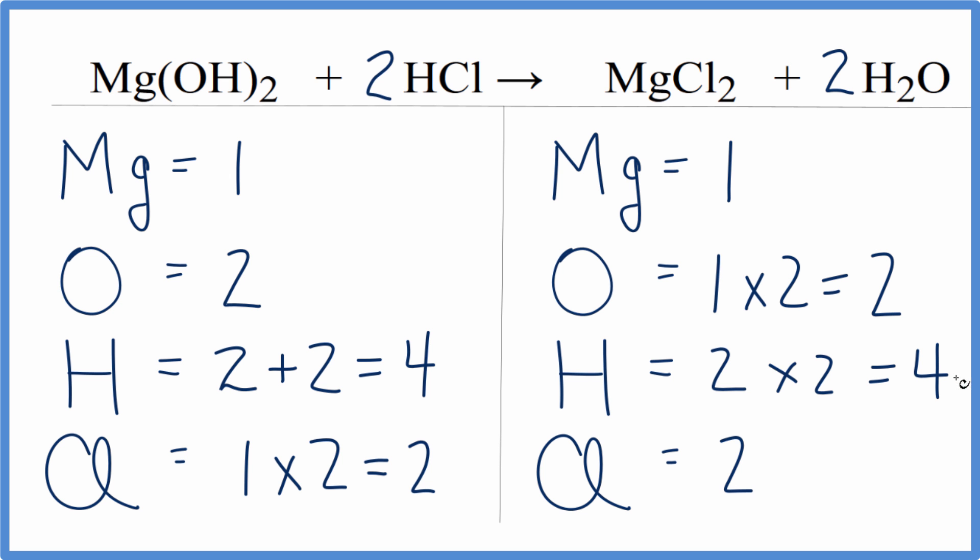At this point, everything is equal on both sides, and we're done. This equation is balanced. People usually have problems with an equation like this—they count these hydrogens and forget about this one, and then it's very difficult to balance.